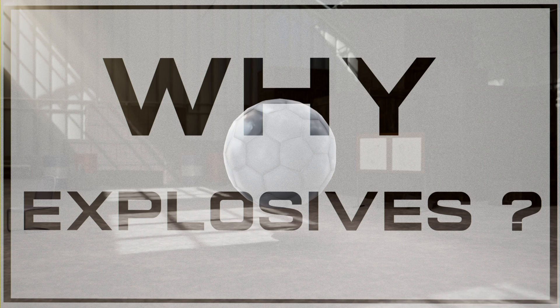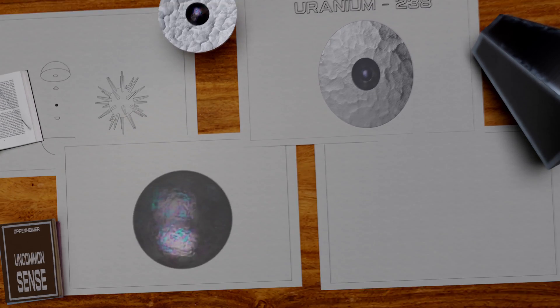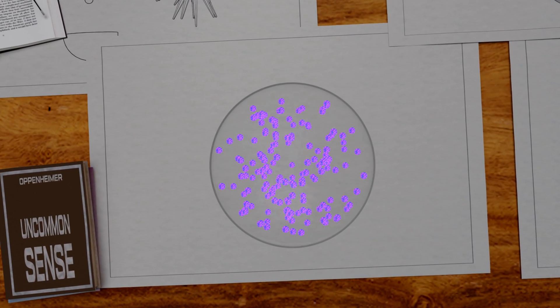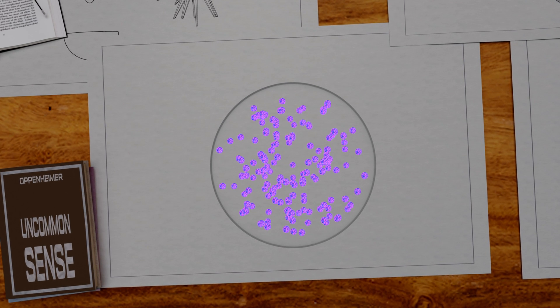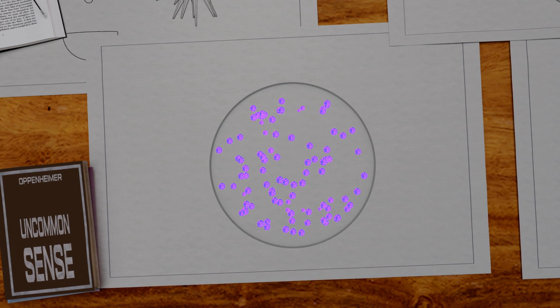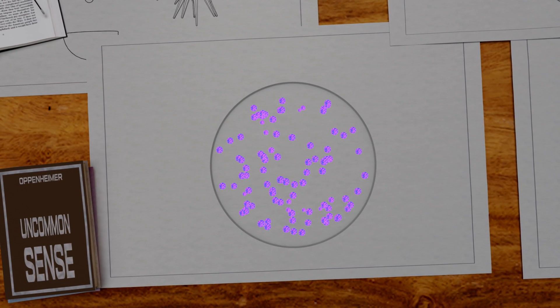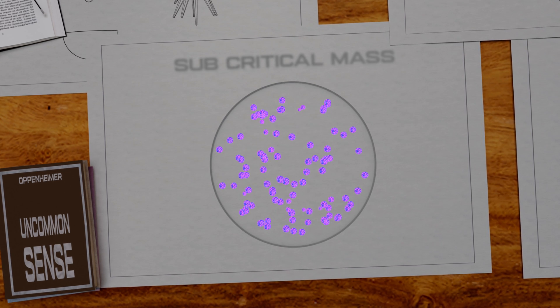But, why do we need these explosives? In the plutonium sphere, when the space between atoms is more, chain reaction slowly dissipates, and fission process stops. When the chain reaction cannot be sustained, plutonium is said to be at subcritical mass.